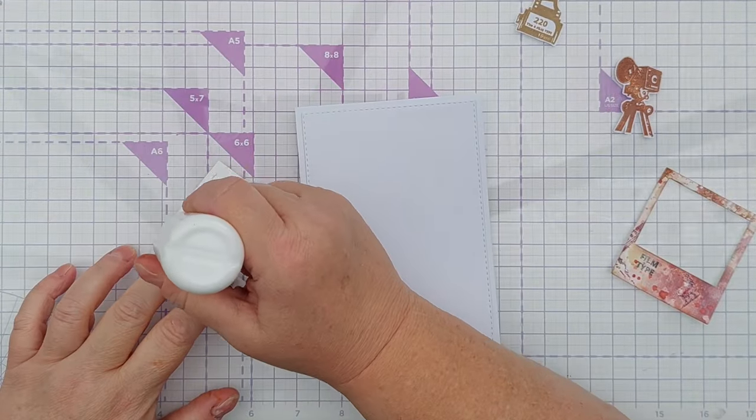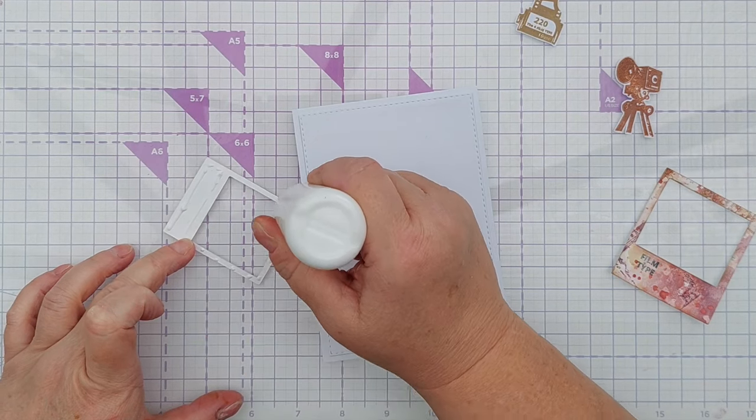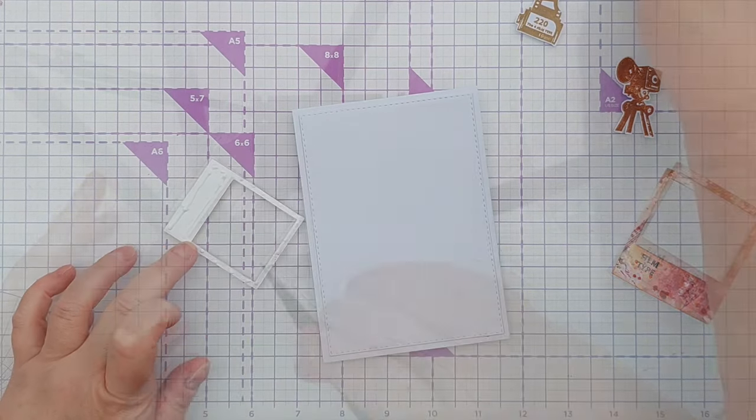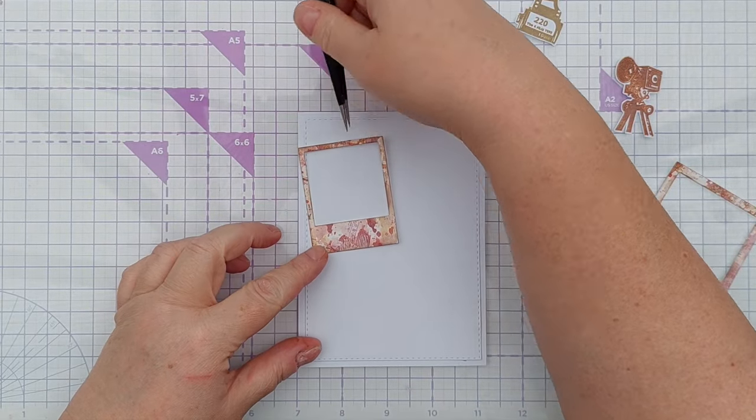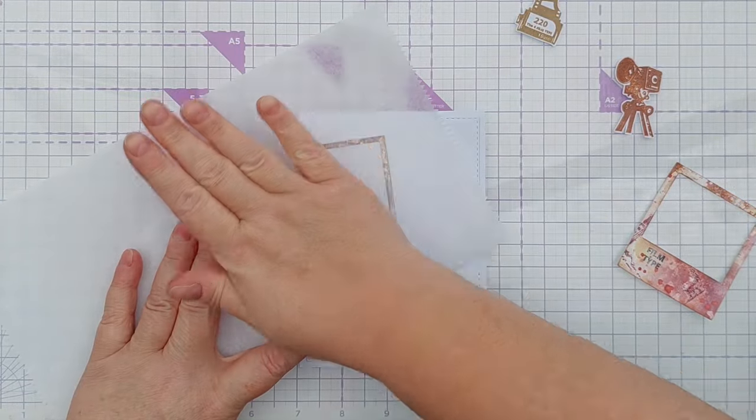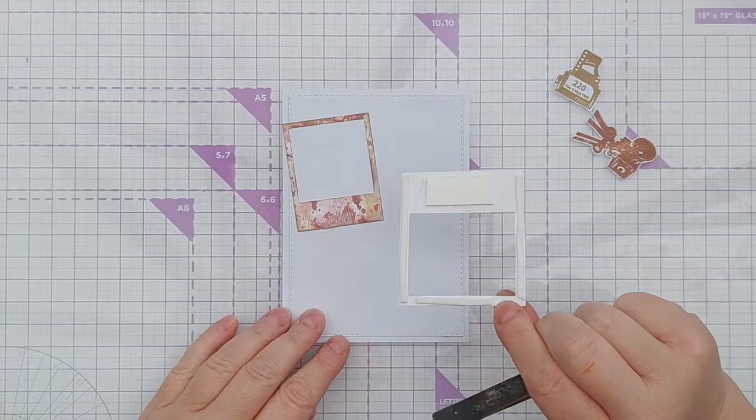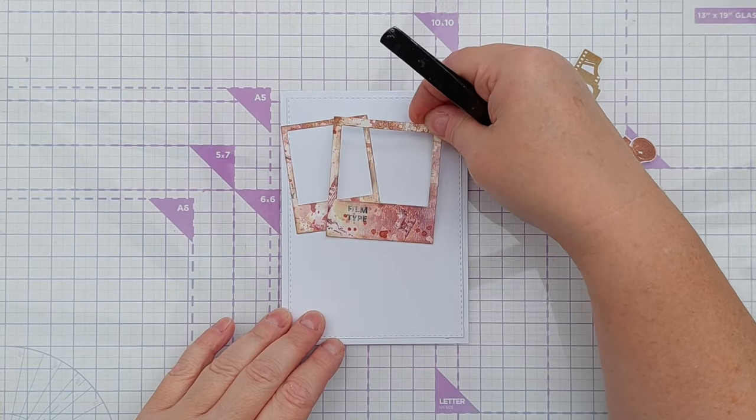Then it was time to start assembling my card. I used matte gel medium on the back of the small frame to adhere it to my card. My card is smooth white cardstock with a panel of smooth white cardstock on the front, so there's a little white border all the way around. I put my small frame over to the left-hand side, pressed it down with a bit of non-stick deli paper.